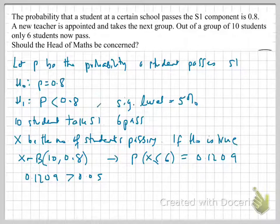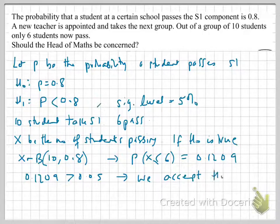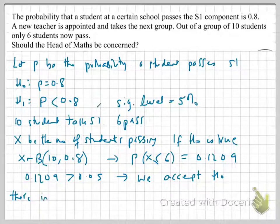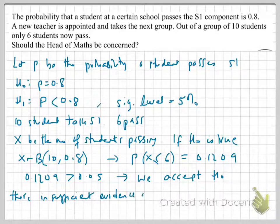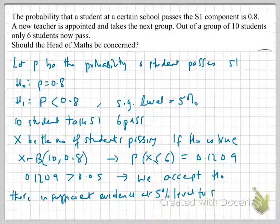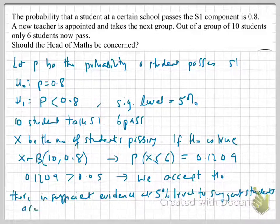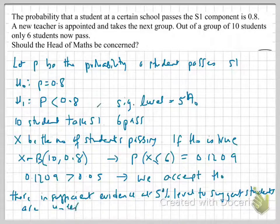So, therefore, this doesn't fall within, that value of x equals 6 does not fall within our critical region. And so, we will accept H0. And by accepting H0, we can therefore conclude that there is insufficient evidence at the 5% level to suggest the students are underperforming. So, there is insufficient evidence at 5% level to suggest students are underperforming.